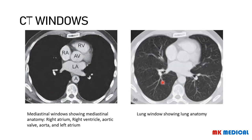Here's a perfect example with the same patient. In the first image — a mediastinal window — you can't really visualize the lung details, it's just dark. But you can see the right atrium, right ventricle, aortic valve, left atrium, aorta, vertebrae, sternum, and ribs. In the second image — the lung window — you can still see those mediastinal structures, but now you can also see the details of the lung parenchyma and lung anatomy.